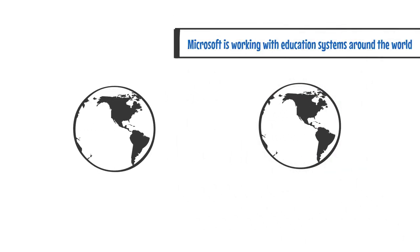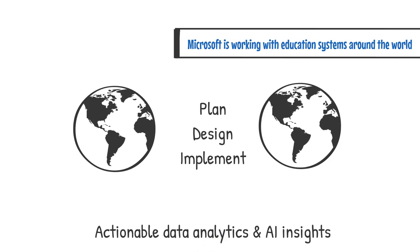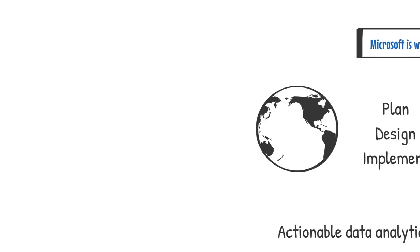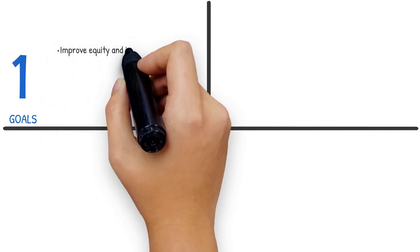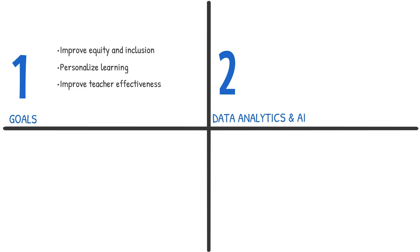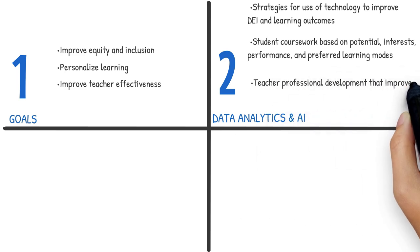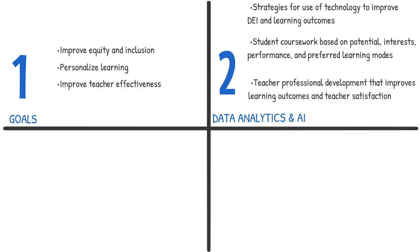These are just examples of how Microsoft and our partners are working with education systems around the world to plan, design, and implement data analytics and AI to gain insights and make them actionable. To begin your data analytics and AI journey, we want to understand your goals, such as improve equity and inclusion, personalize learning, and improve teacher effectiveness. Then we work with you to identify the data analytics and AI that will help achieve these goals, such as recommending best strategies for use of technology to improve diversity, equity, and inclusion, as well as learning outcomes, student coursework based on potential, interests, performance, and preferred learning modes, and teacher professional development that improves learning outcomes and teacher satisfaction.